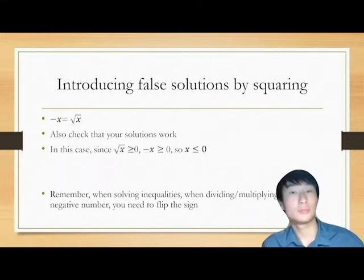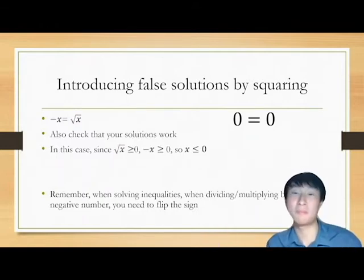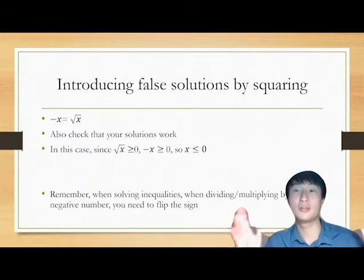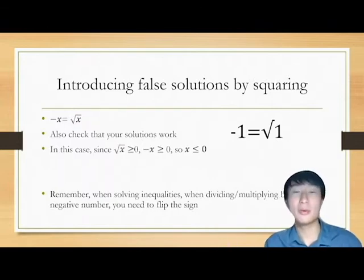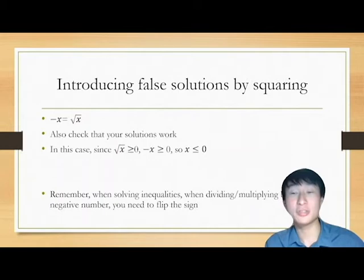However, when you sub that back in, sub in 0, sure you get 0 on the left side, 0 on the right side. But when you sub back in positive 1, you get negative 1 equals 1. That's not the case. Remember, when you square something on both sides, you might introduce false solutions.